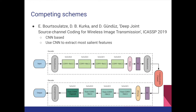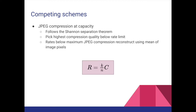We compare our design with two competing schemes. The first is another deep joint source channel coding design based entirely on convolutional neural networks; we hope our additional recurrent component offers superior performance. The second is the separate source and channel coding design using JPEG compression and capacity-achieving codes. The Shannon Separation Theorem states that the maximum number of bits per source sample that can be communicated reliably equals (k/n)·C, where k is the channel bandwidth, n is the source bandwidth, and C is the channel capacity. We pick the highest JPEG compression quality just below this maximum rate, and for all rates below this, we reconstruct the image using the mean of the pixels.